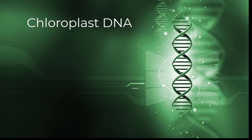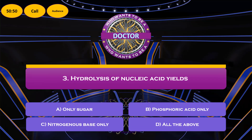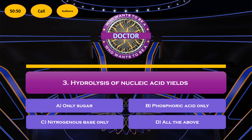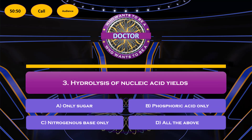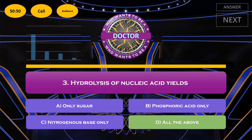Next question: hydrolysis of nucleic acid yields — option A: sugars only; option B: phosphoric acid only; option C: nitrogen bases only; option D: all the above. The correct answer is option D, all the above, because nucleic acids are made up of sugars, phosphoric acid, and nitrogenous bases.